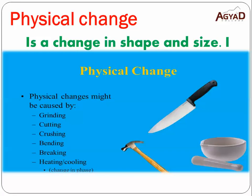The physical change is a change in shape. For example, if you have a piece of iron and you bend it, it is still iron — you only change its shape. If you have a ruler that is broken, it is still a ruler. If you have a pencil and you break it, it is still a pencil. If you have a piece of wood and you cut it, it is still wood. All these are called physical changes because they are changes in shape only.